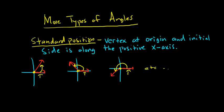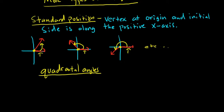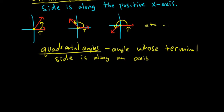There are special angles called quadrantal angles. A quadrantal angle is an angle whose terminal side is along an axis. These are extremely important in mathematics, and trigonometry is extremely important in mathematics — it's good to learn it.